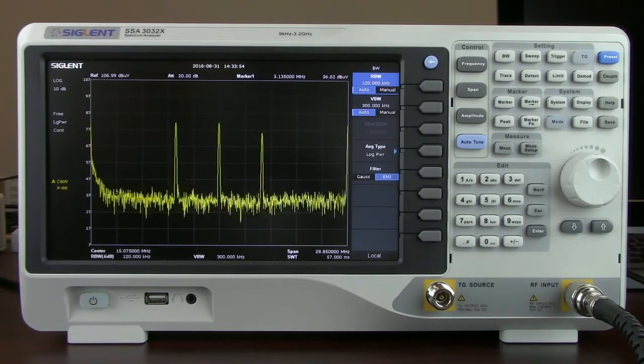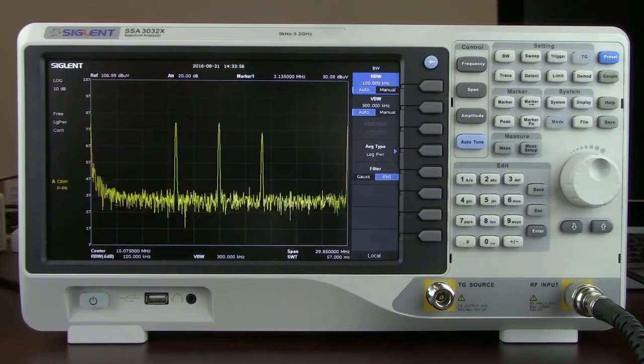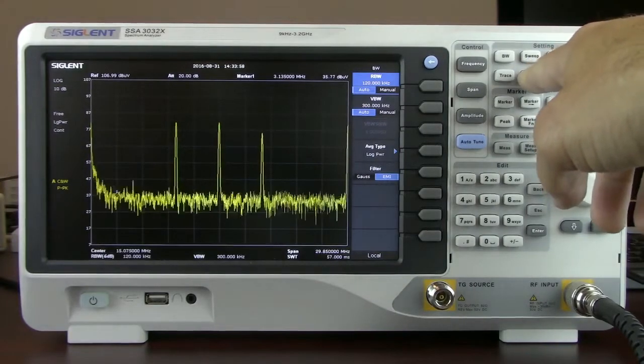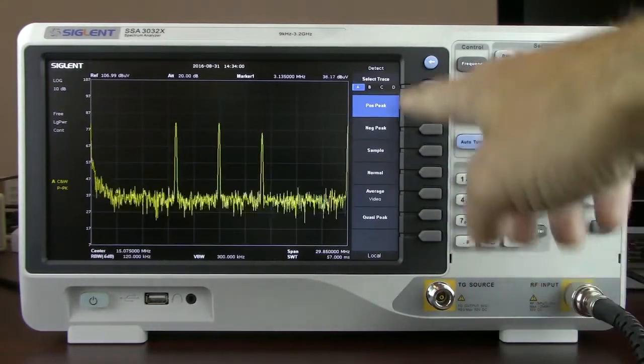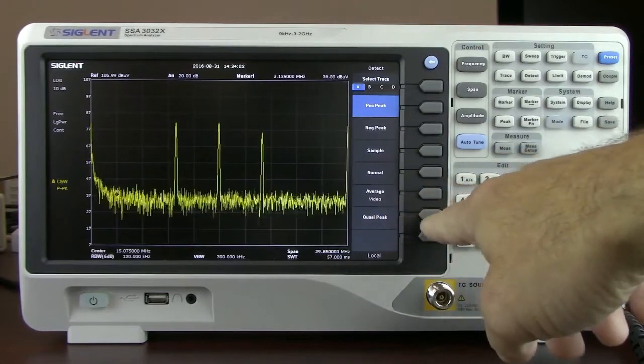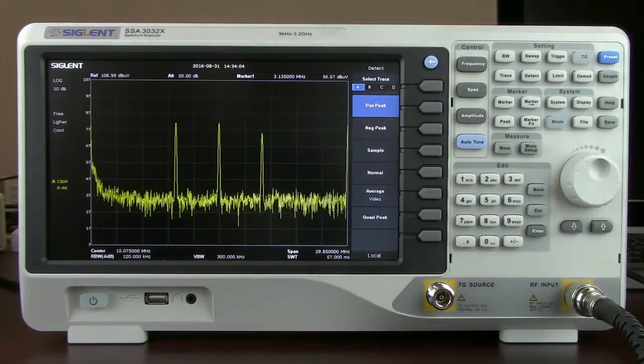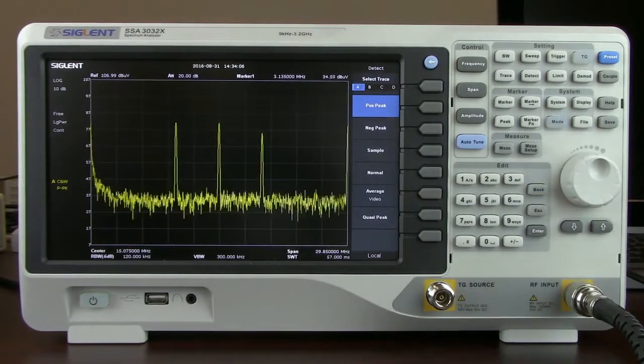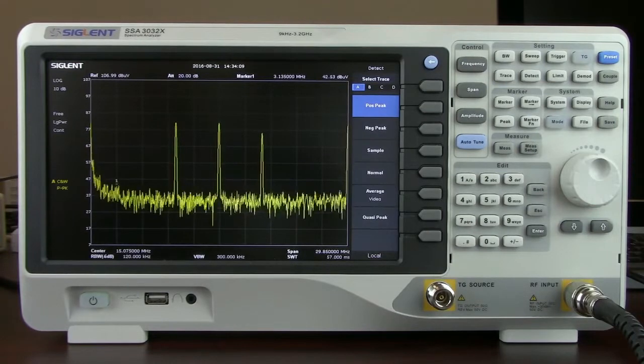Those are defined bandwidths for the FCC as well as CISPR measurement standards for compliance. And then we're also going to be able to activate the quasi-peak detector. So we can press detect and now you'll see that the quasi-peak detector is available and we can select that.